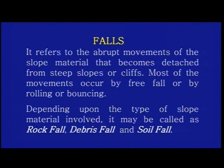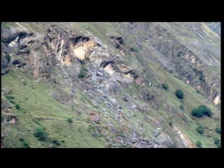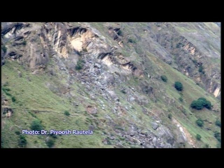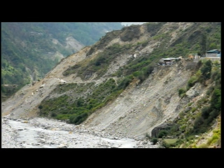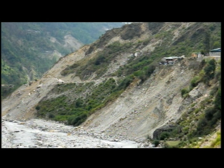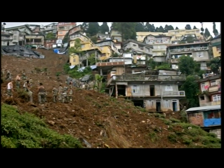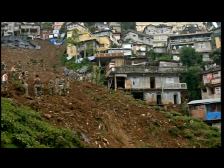The first category of landslide types is falls. It refers to the abrupt movement of slope material that becomes detached from a steep slope or cliff. Most movement occurs by free fall, rolling, or bouncing. Depending upon the type of slope material, it may be called a rock fall, debris fall, or soil fall. Rock fall is a mass of rock of any size detached from a steep slope that descends mostly through the air by free falling. Debris fall is similar but involves smaller material. Soil fall is the same but involves soil.